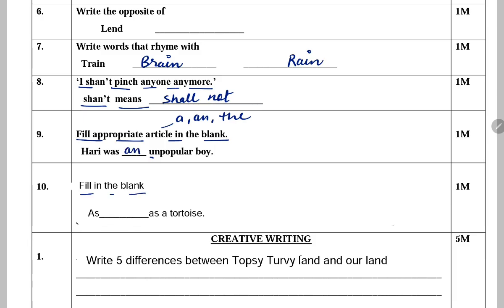Fill in the blank: 'as blank as a tortoise.' Tortoise jaana jaata hai apne slowness ke liye. So, 'as slow as a tortoise.' Yeh ek saying bhi hai, kahawat bhi hai.